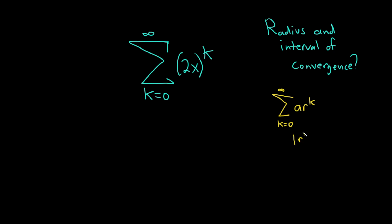If the absolute value of r is less than 1, then we have convergence of the infinite series. And if the absolute value of r is greater than or equal to 1, then we have divergence of this infinite series.